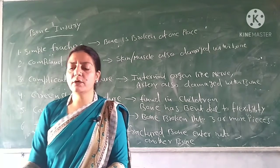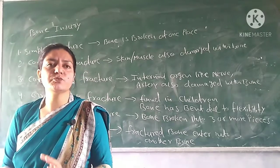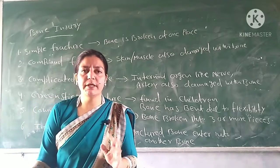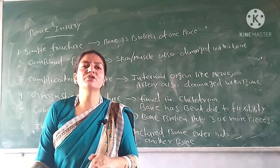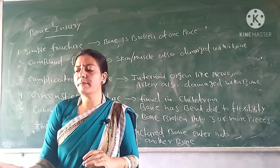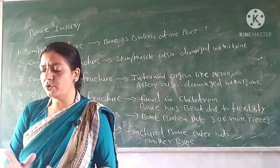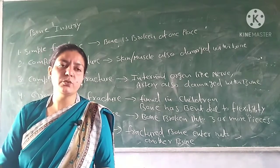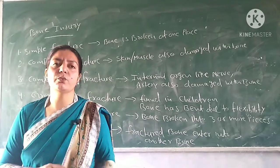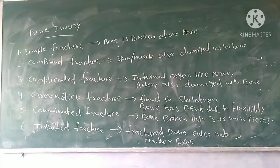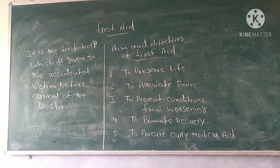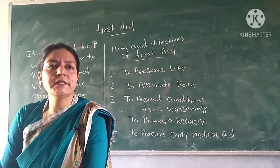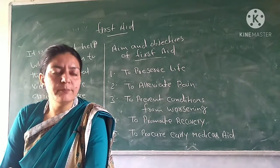To summarize, the particular injuries we face in sports are soft tissue injury, bone injury, and joint injury. We have also discussed their causes and prevention. Now we will talk about first aid — the immediate help given to an injured person before the arrival of a doctor.